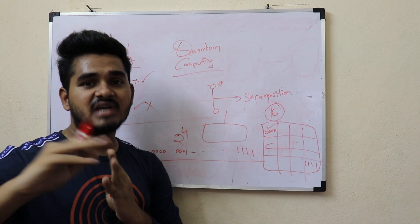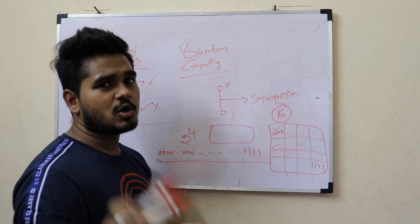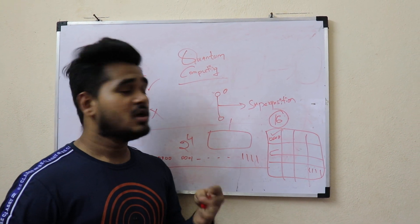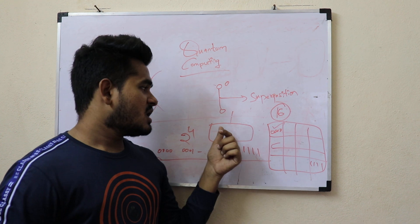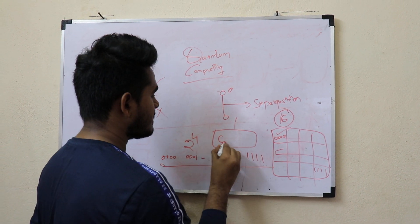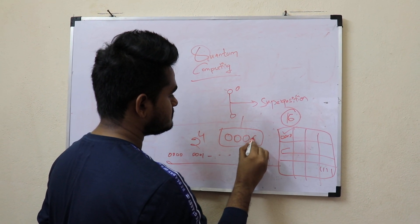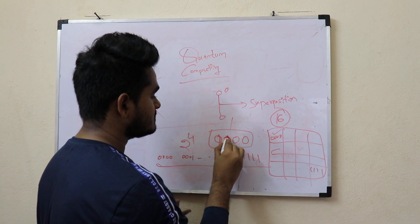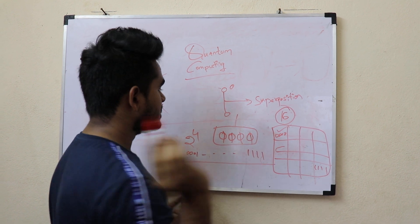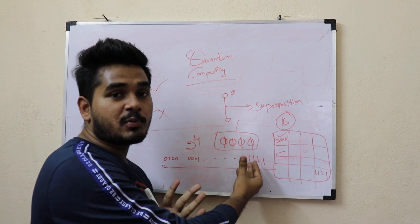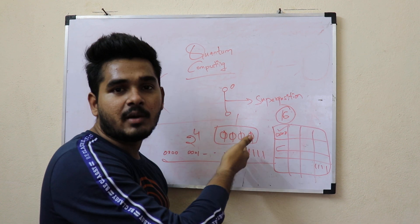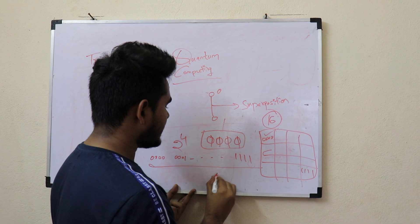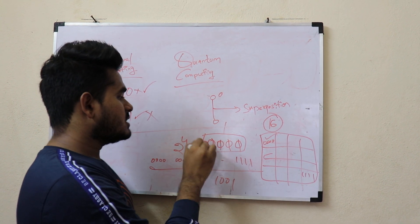In normal computing, you write zero zero zero zero first, and if it fails you write zero zero zero one, and so on. But in quantum computing, every individual bit is both zero and one simultaneously. So if you give your probability equation to the quantum computer, in a single attempt it considers the entire set of possibilities.